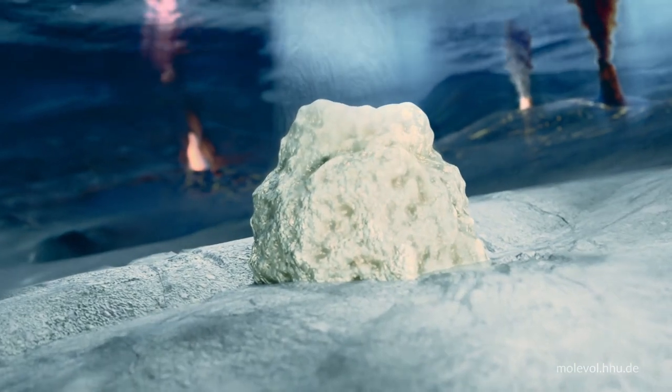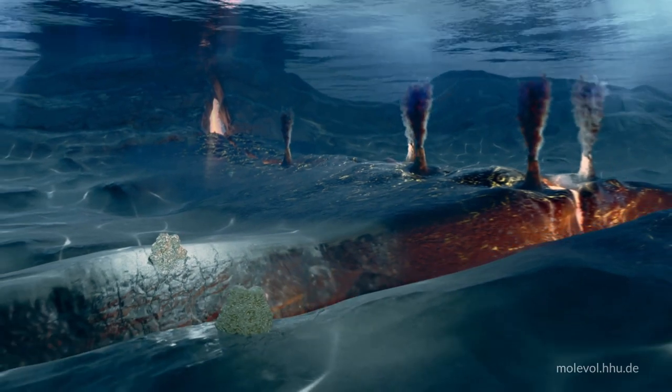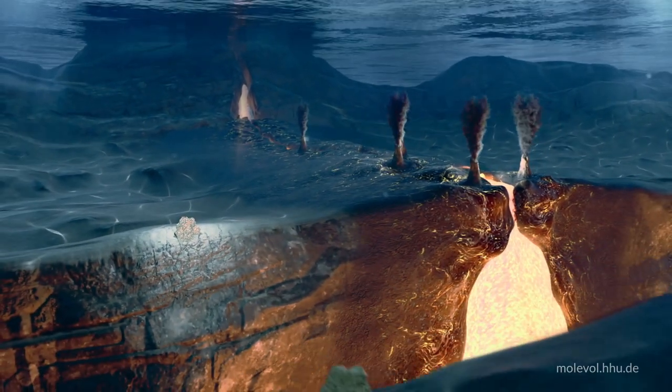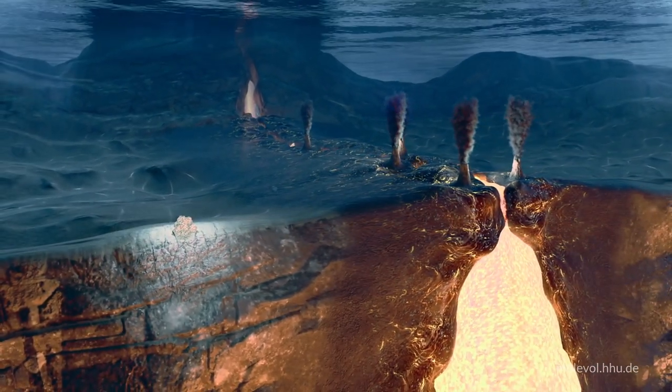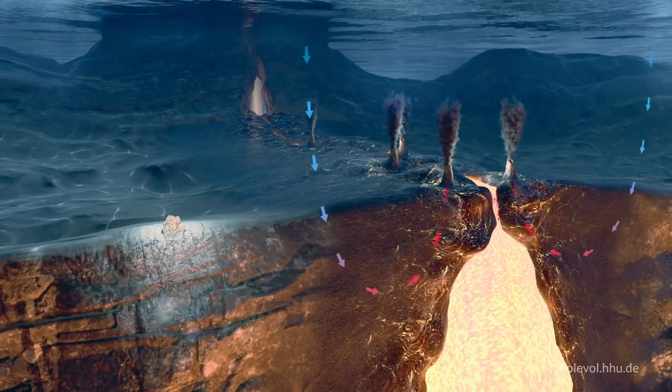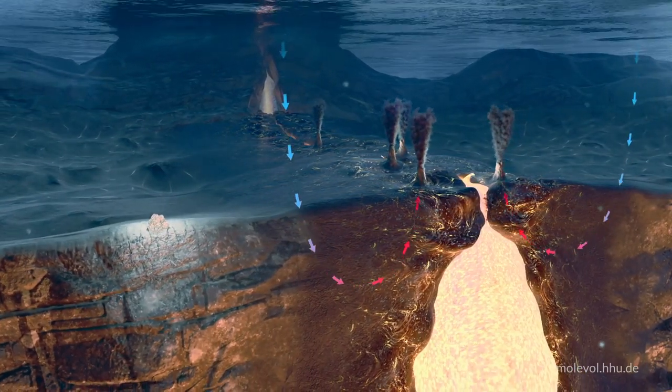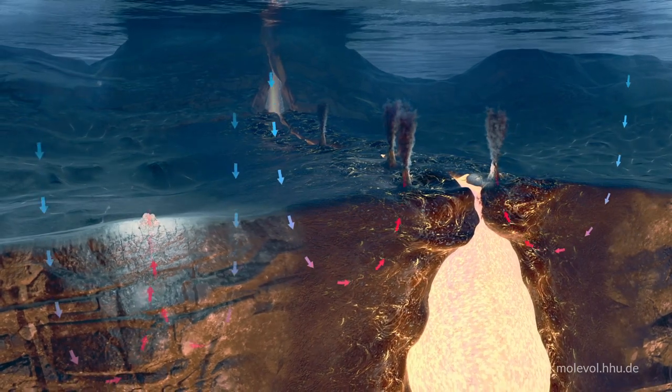If we take a cross-section, we can see that black smokers sit directly over a magma chamber. The water that circulates through them is superheated by close contact with 1,200-degree hot magma. At off-ridge vents, the circulating water never sees magma and has a temperature of under 100 degrees.